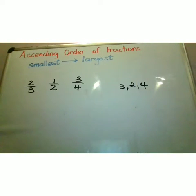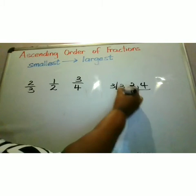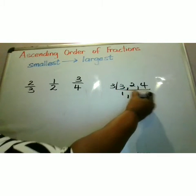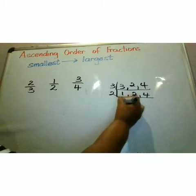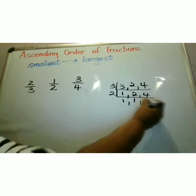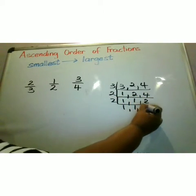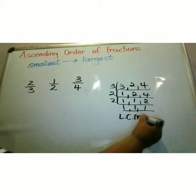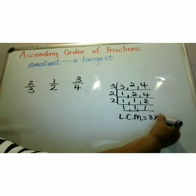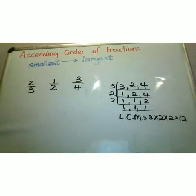So I must find the LCM of 3, 2, and 4. Remember, when finding the LCM, I must only divide using prime numbers. My LCM is equal to 3 multiplied by 2 multiplied by 2, which is 12.